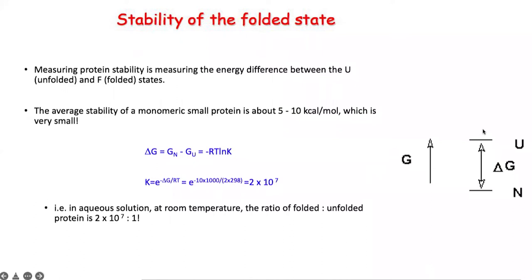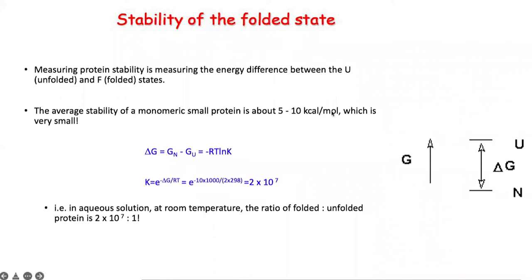You can talk about a folded state by looking at the energy differences between the unfolded and the native folded states. If we plug in average numbers for temperature and the gas constant, for a protein with stability of about 10 kilocalories per mole — which is what experimental measurements tell us — the number we get is about 2 × 10⁷. This tells you that at any point in solution, for a protein verified at 10 kcal/mol, there are 10⁷ molecules which are folded and only one which is unfolded. The folded and unfolded states are always in dynamic equilibrium with each other — the unfolded state goes to the folded state and back — but there is a heavy bias towards the folded state.